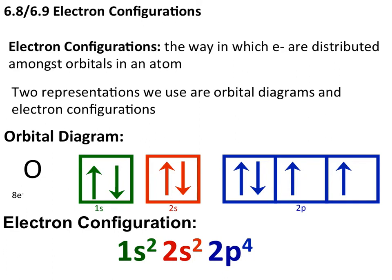Another way to represent electron configurations is through simple electron configurations. Instead of drawing boxes, we write out the orbital energy level and the type of orbital, with a superscript representing the number of electrons present in each orbital type. The 1s has a superscript of 2, the 2s has a superscript of 2, and the 2p orbitals have four total electrons. Both of these are ways you may be asked to diagram the distribution of electrons in an atom.